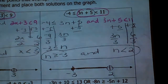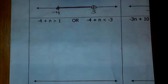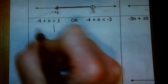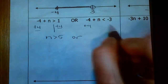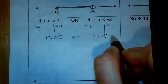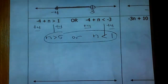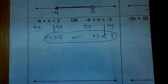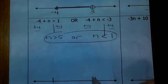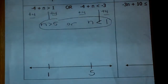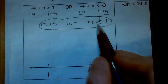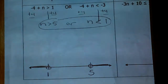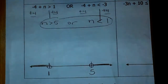Now we're dealing with some 'or' examples. This one is already separated by an 'or' statement, so solve both equations. Add 4 to each side of the first: n is greater than 5. Add 4 to the second: n is less than 1. The solution is n > 5 or n < 1. Put the lower digit on the left and the higher on the right. n > 5 means open circle at 5, shade right; n < 1 means open circle at 1, shade left. It looks like the oars of a boat.